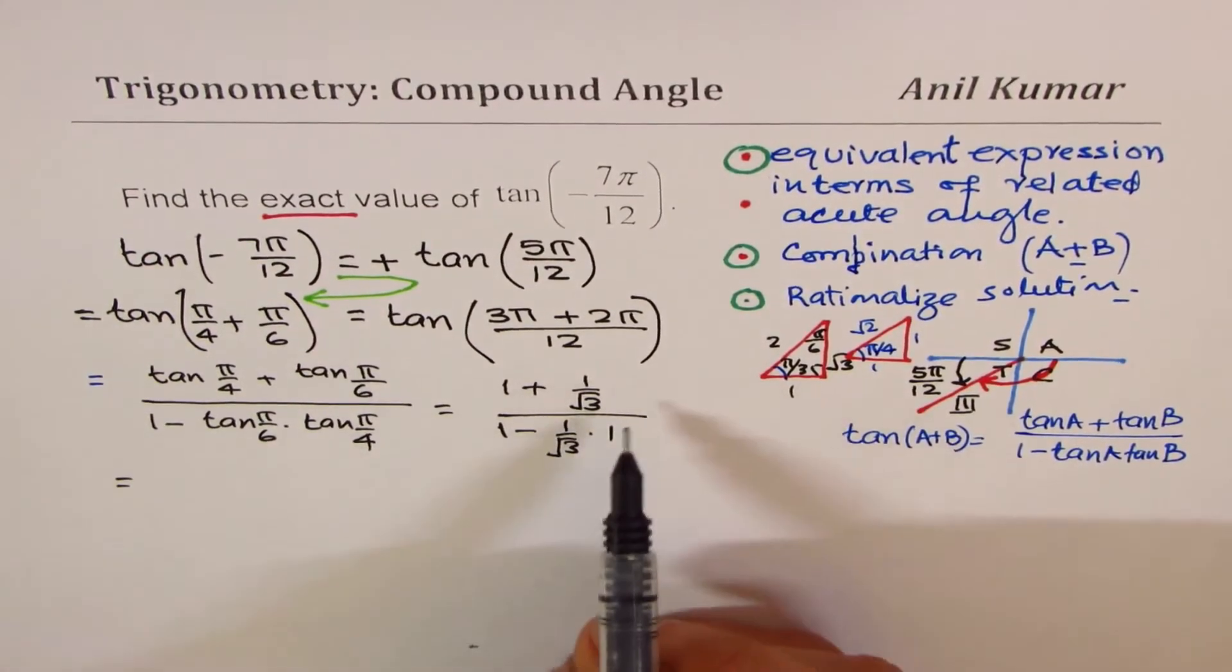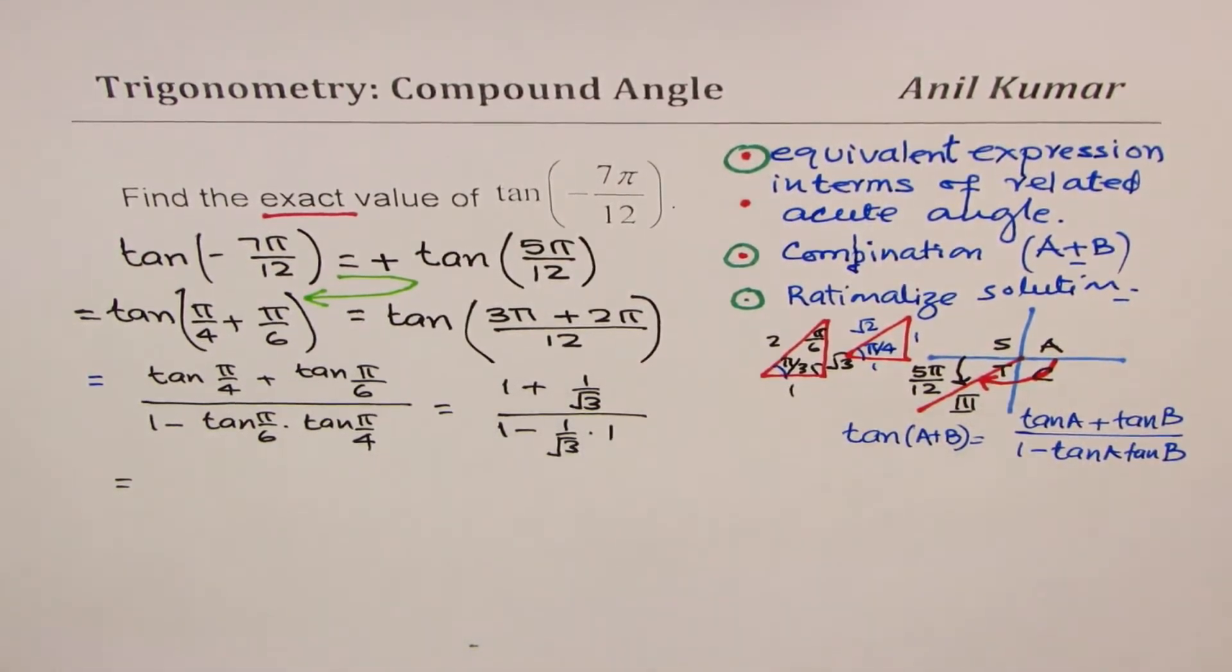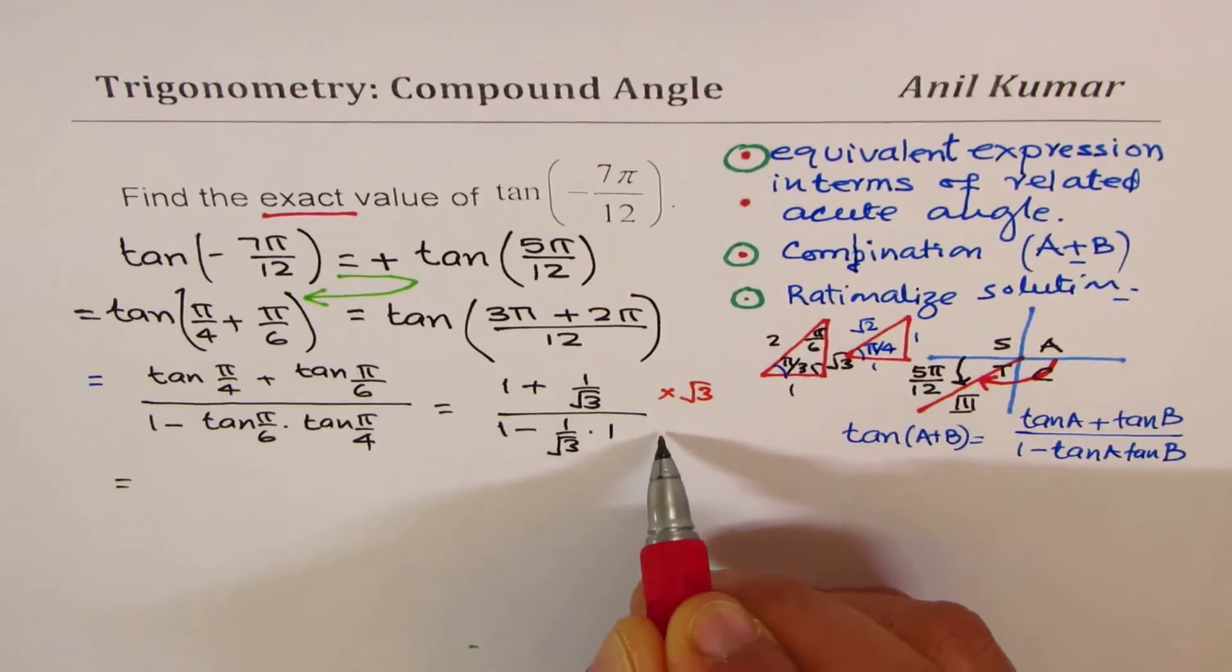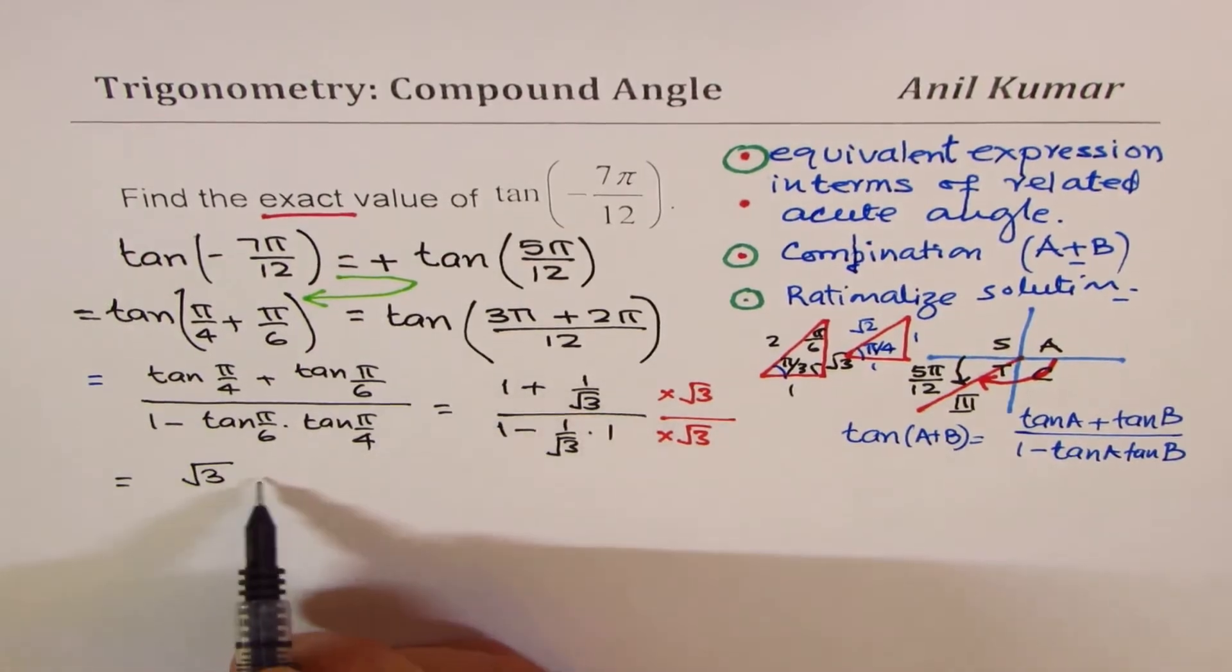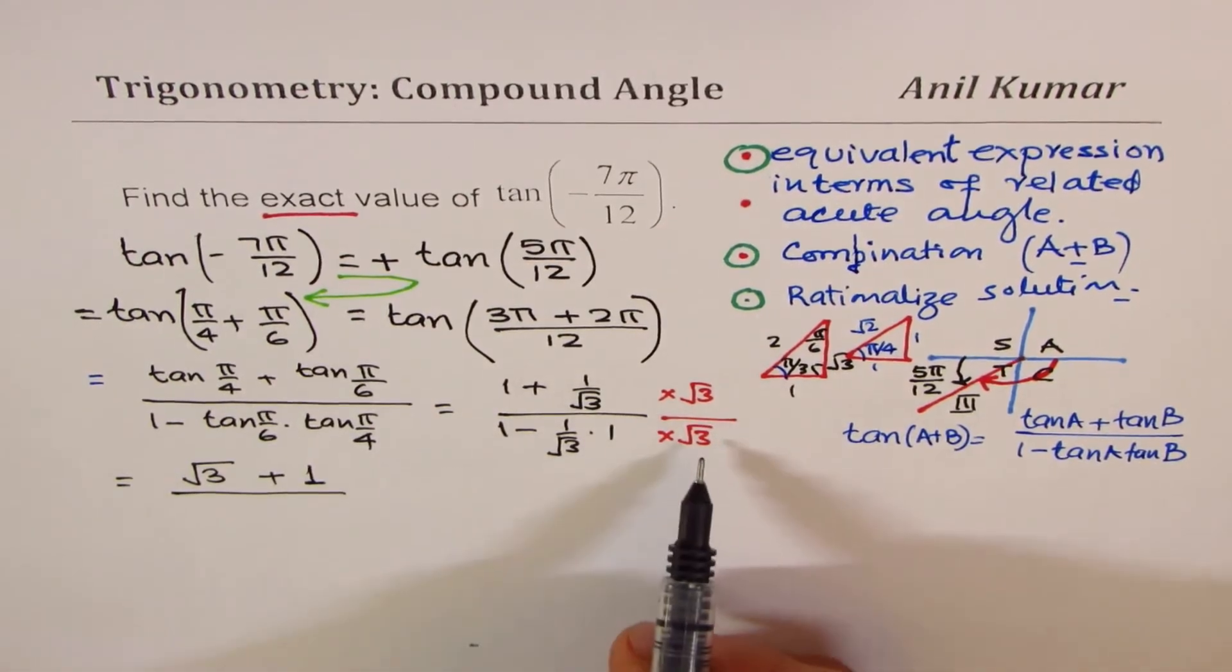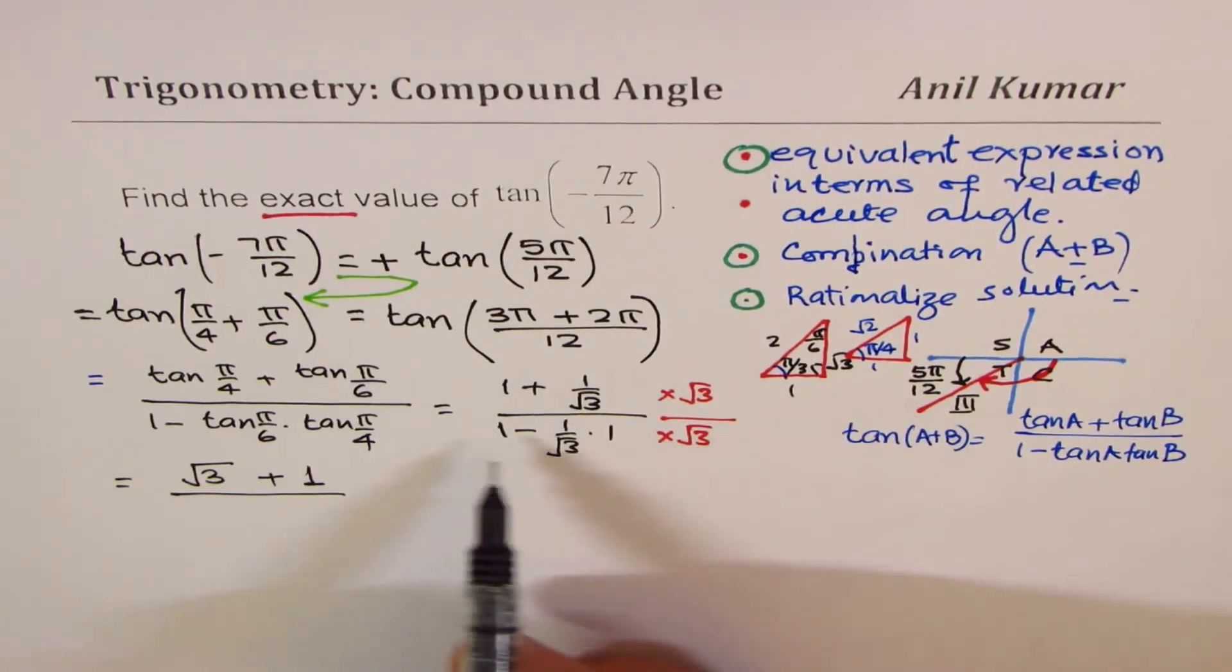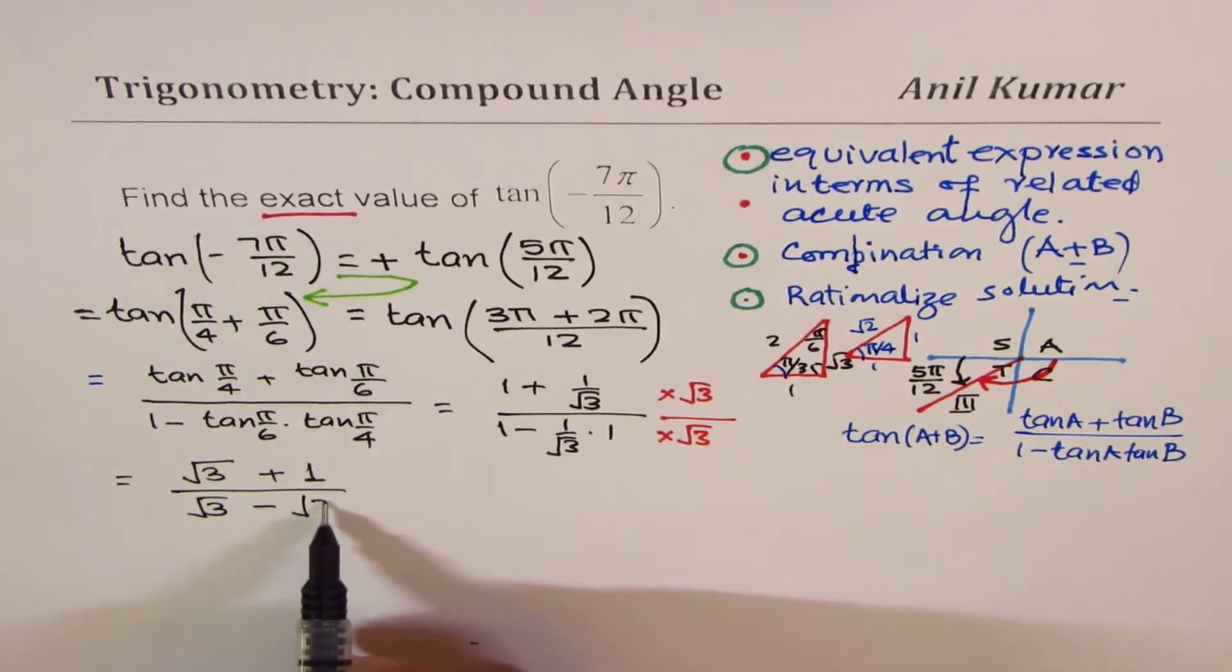To simplify this, what you could do is just times both numerator and denominator by √3. If I do that, √3 times 1 is √3 plus when you times this you just get 1 here. √3 times 1 is √3 minus √3. Does it make sense to you?